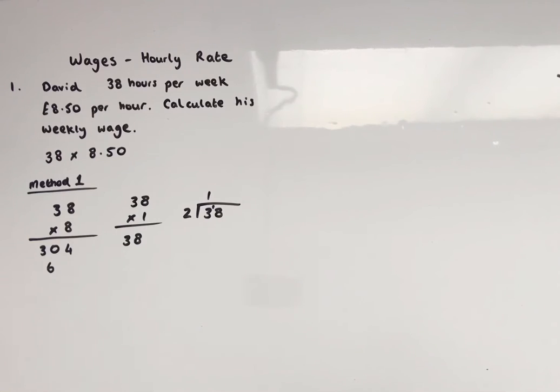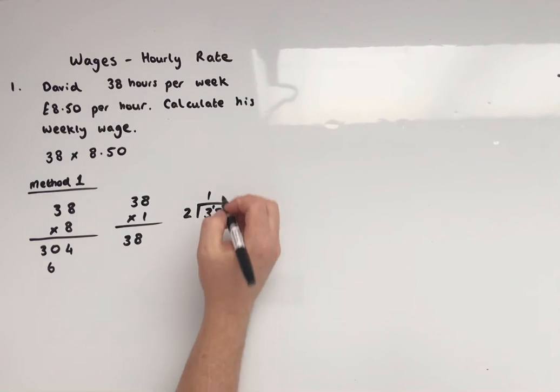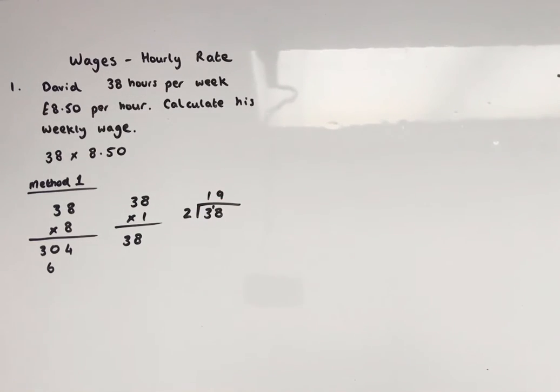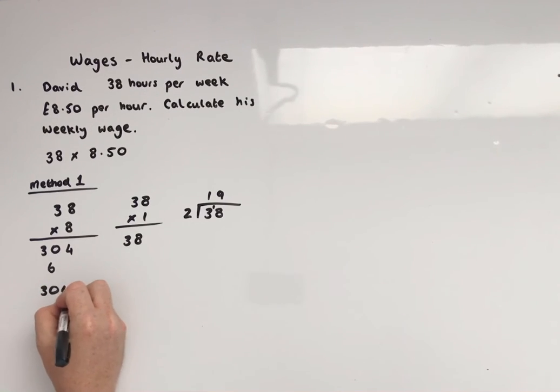2 into 3 goes 1 remainder 1, 2 into 18 goes 9. Okay, so we've got £19.